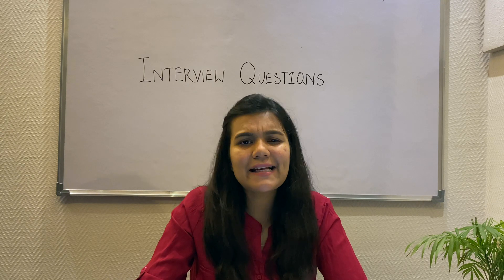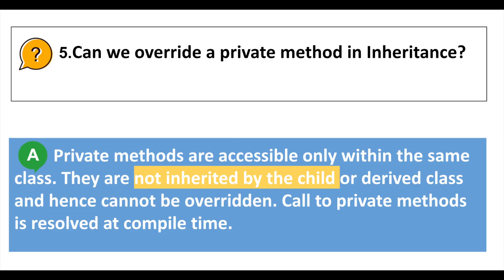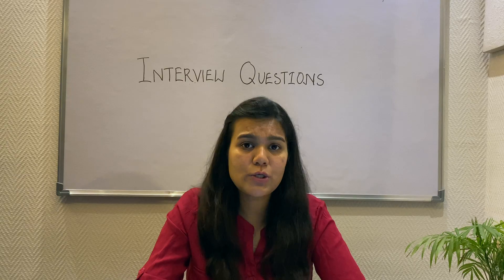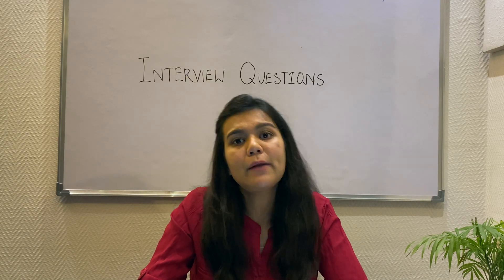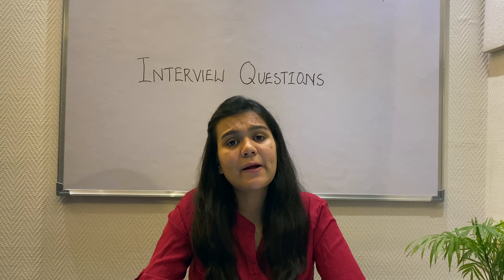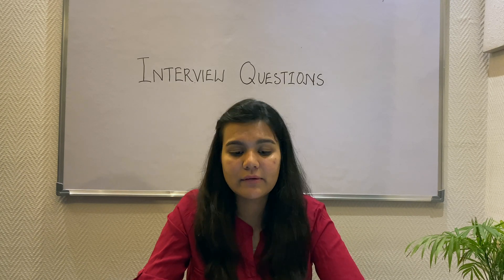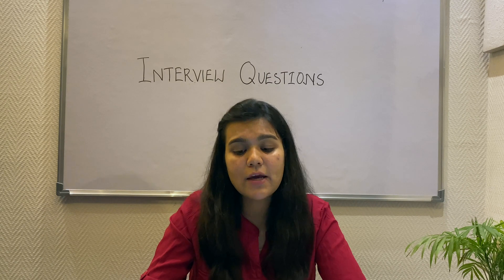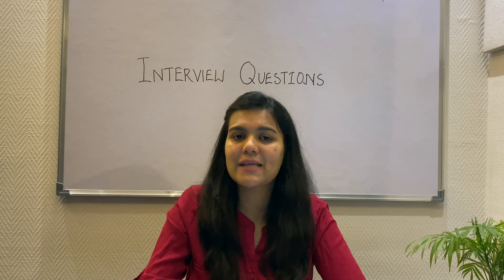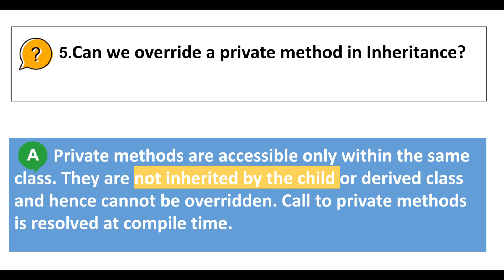Now a slightly conceptual question where the interviewer is looking for your understanding: Can we override a private method in inheritance? You need to understand two things — overriding and private access specifier. Overriding is the technique in which the child class provides a different implementation of the base class method. A private access specifier restricts the method's access to the same class, so the method is not visible outside the class. If it is not visible outside the class, it cannot be overridden by a child class, and hence private methods are not inherited by the derived class and cannot be overridden.